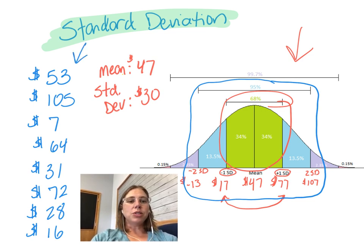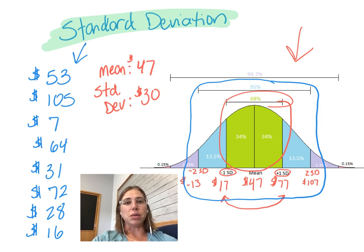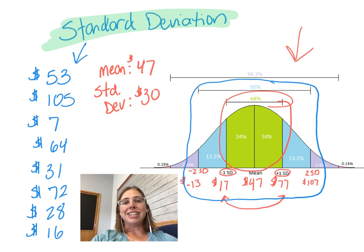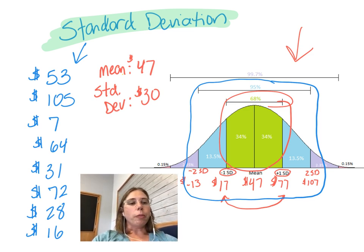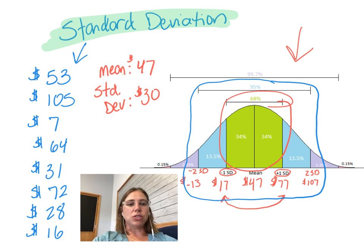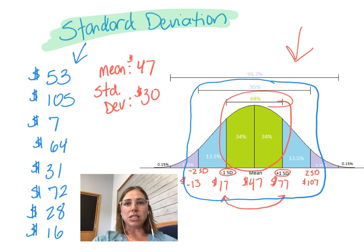Looking at our data here, we see that all of our data falls within two standard deviations of the mean. But remember, standard deviation is being calculated based on the idea that this is just a small sample of the whole population. We could keep going out to three standard deviations, but there you have the basic idea of what a standard deviation really means.